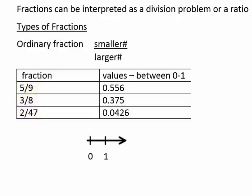And essentially, this means 5 divided by 9, which is 0.556, 3 divided by 8, which is exactly 0.375, and 2 divided by 47, which is 0.0426. I want to point out that ordinary fractions, where we have a smaller number over a larger number, have values between 0 and 1. In other words, decimal values, really small numbers.